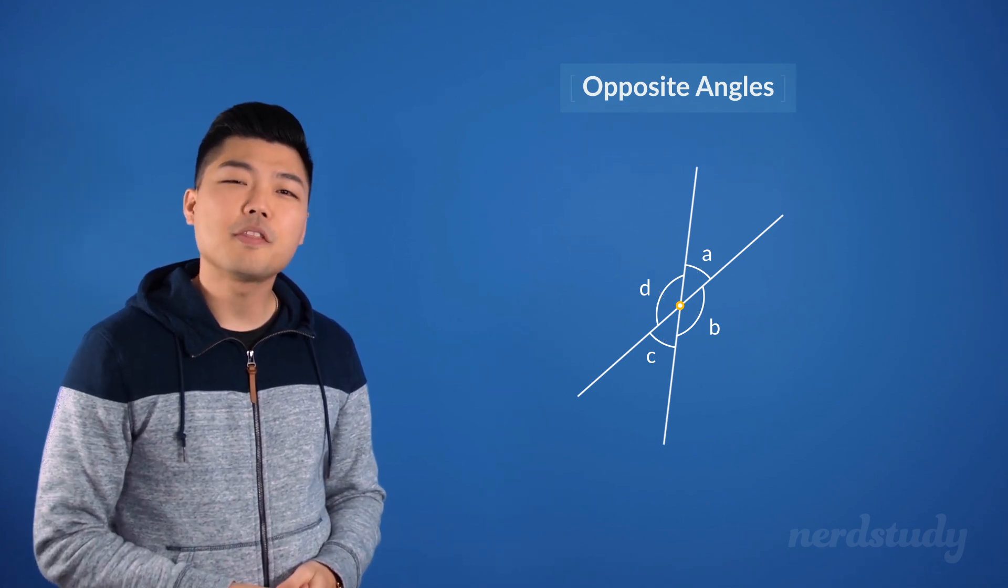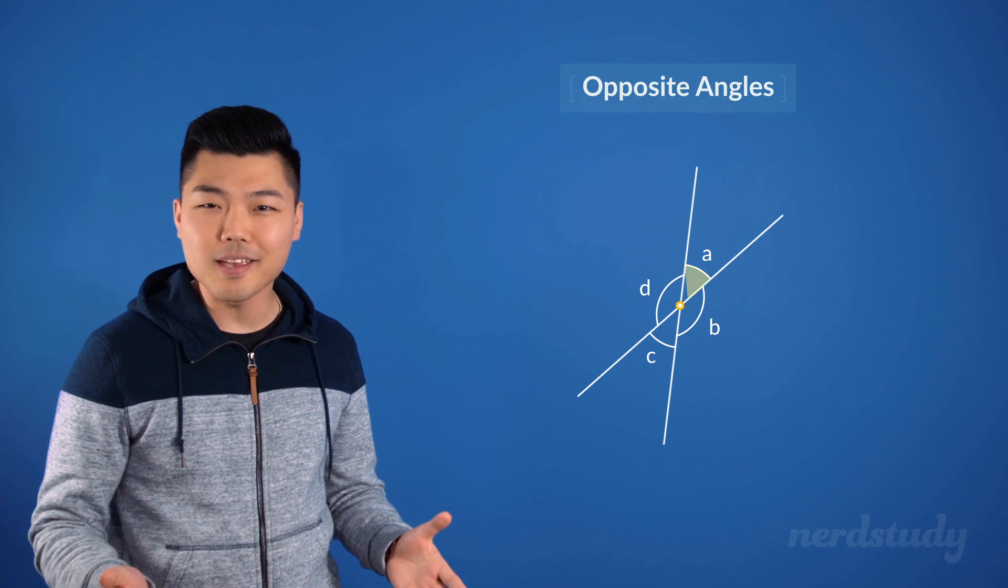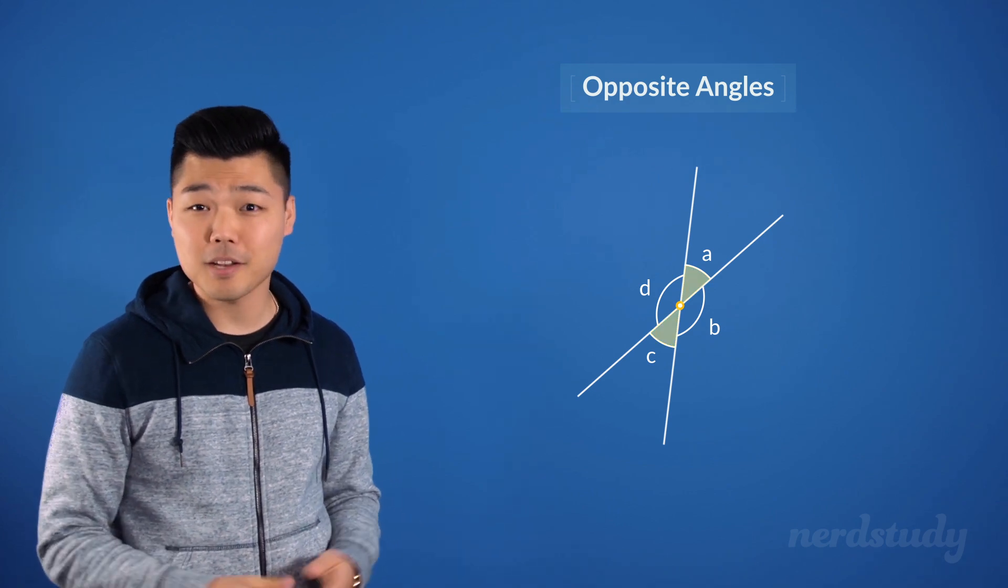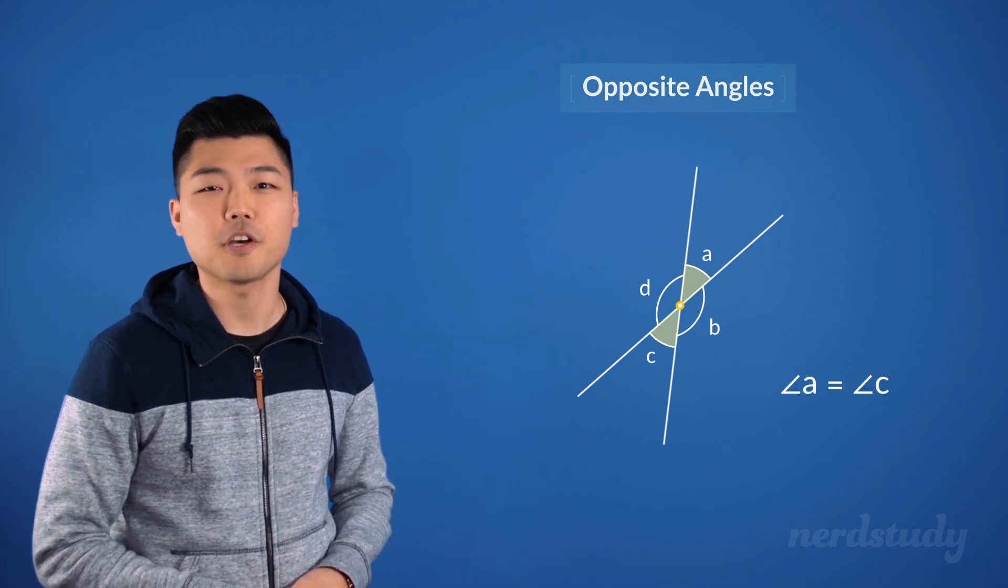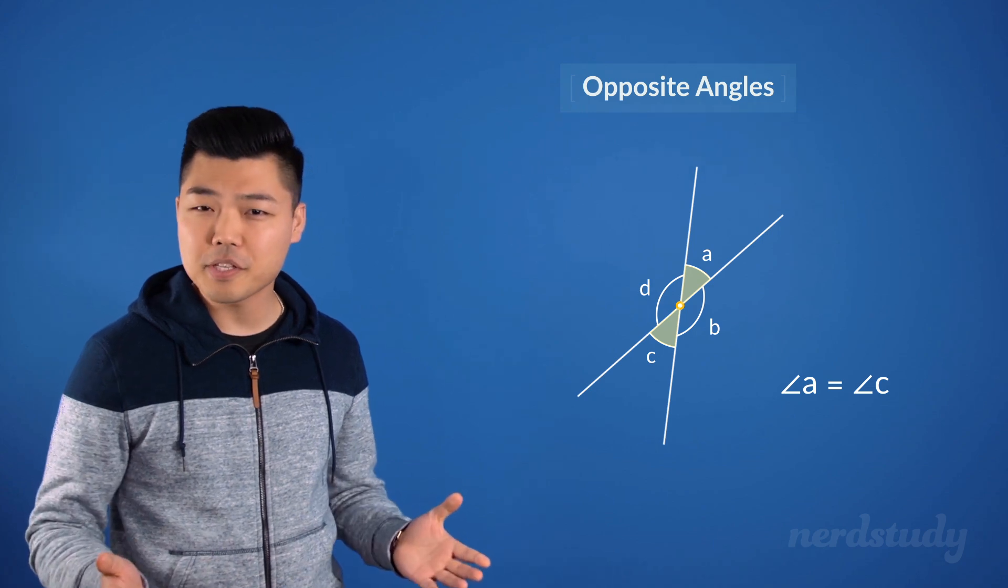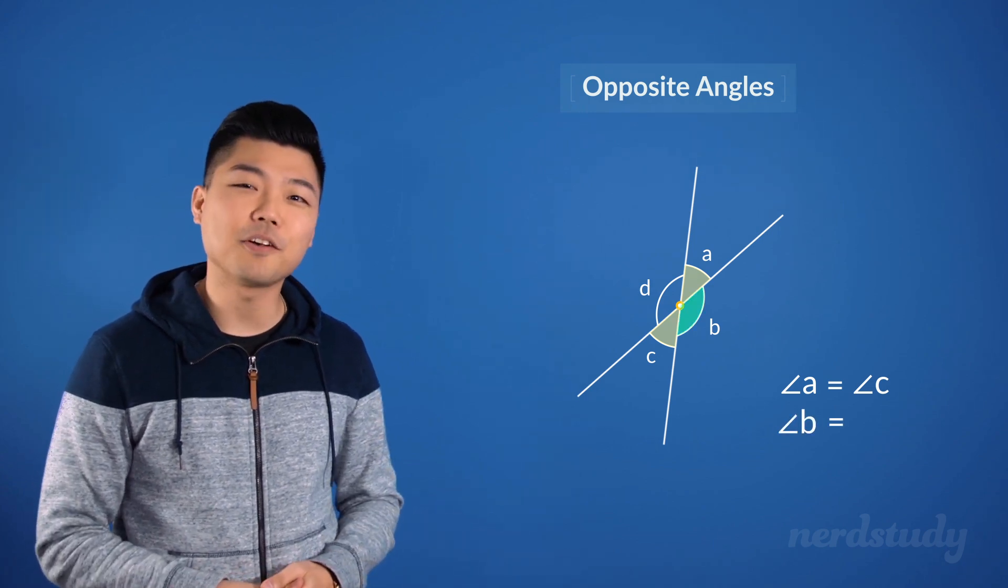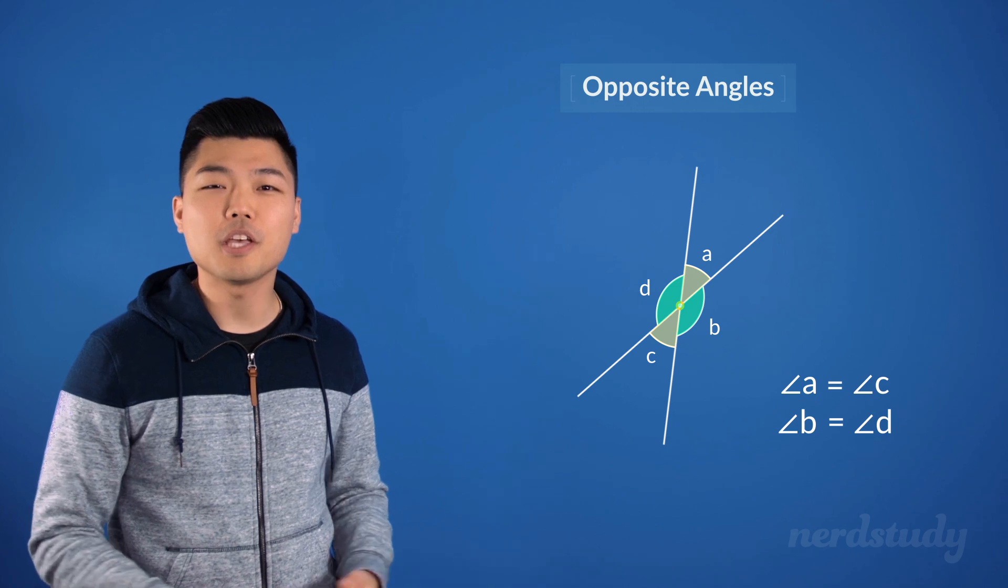So, in this example, the opposite to angle A is angle C, and we know that they are equal to each other. And the opposite to angle B is angle D, which are also equal.